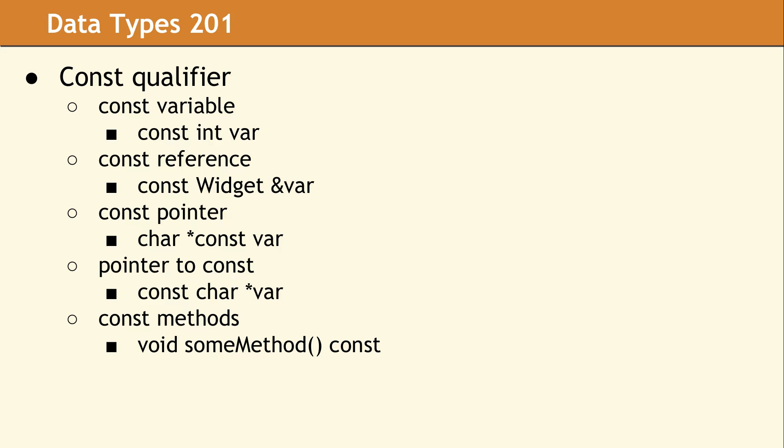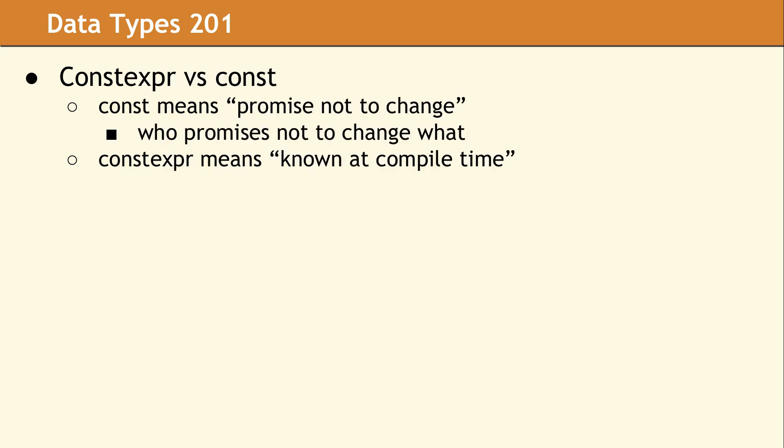Another building block of C++ is the const qualifier. As you can see by these examples, const can be located in various positions and the meaning of what is const changes depending on its location. Every const is interpreted as who is not allowed to change what. So, for example, in const int var, var cannot be changed by anyone. In the void some method const, that const means that some method will not change this. It's very important to contrast const expr, which was added in C++11, versus const. Const means somebody is promising not to change something. Const expr, on the other hand, means this value is a compile time constant. It is known at compile time and will never change.